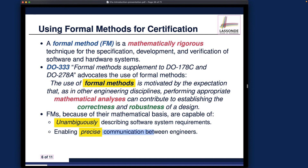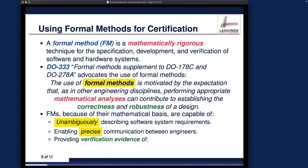Formal methods also enable precise communication between engineers. Since everything is unambiguous, when you send your system model to a colleague or customer they can understand precisely what you meant, with no miscommunication. In contrast, natural language is very notorious for leaving scope for ambiguity and interpretation — if a collaborator interprets the requirements differently than you, you cannot work together effectively. Formal methods can also provide verification evidence: if you build your system with precision and without ambiguity, you can prove properties about the model, and completing that proof gives high-confidence evidence.